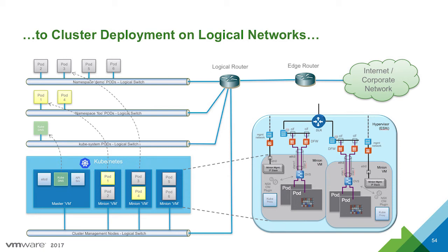Let's now close the loop on the discussion we had on container interfaces, service load balancers, and logical networks, detailing a few logical networking components inside the Kubernetes pod. In Kubernetes terms, a pod exposes its interface with a unique IP address. Traffic can flow in and out of the pod toward additional services, eventually on different namespaces. Logical switches, logical routers, and logical load balancers render the virtual forwarding environment for container traffic, as highlighted in the diagram.